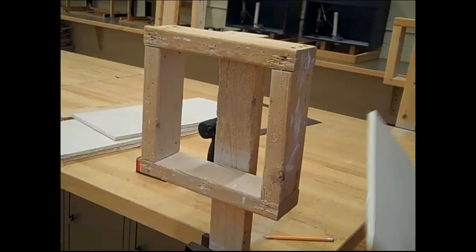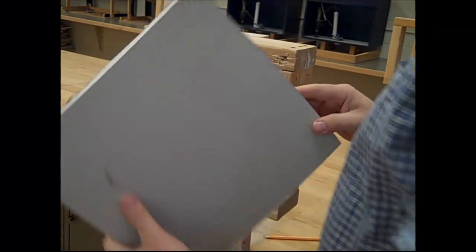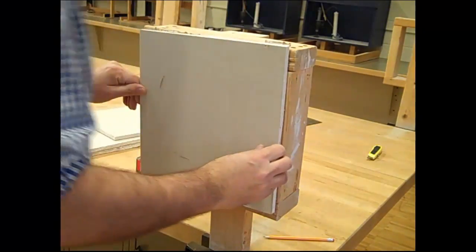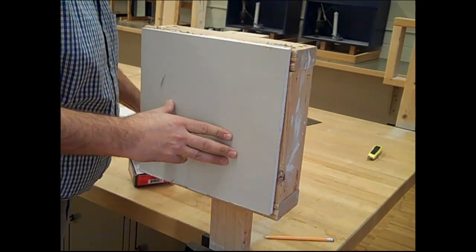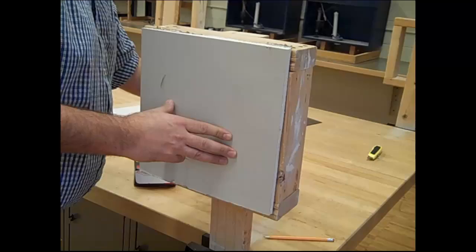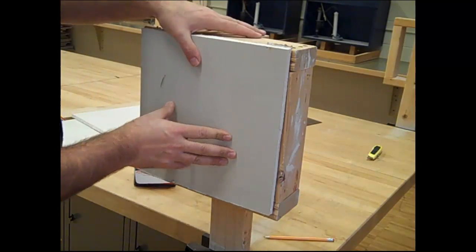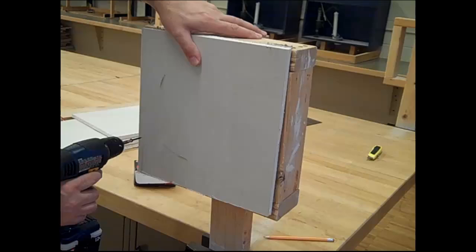Take that block of sheetrock. Hold it up over the top of the square. Use the screw gun, place a screw on the end of the gun, and screw this on.